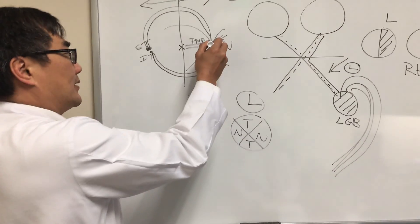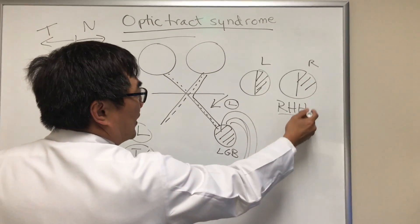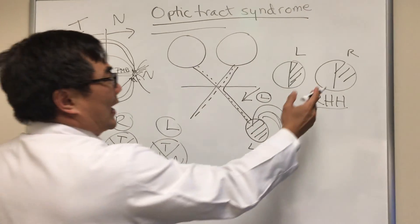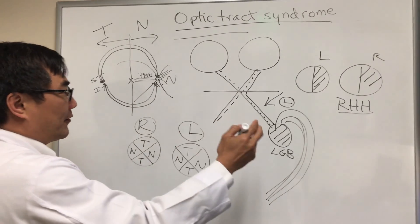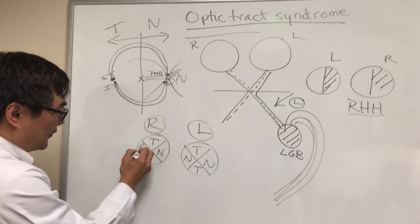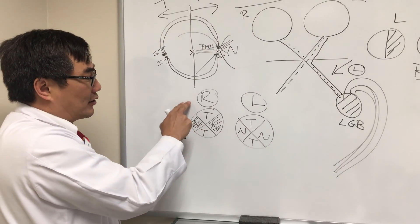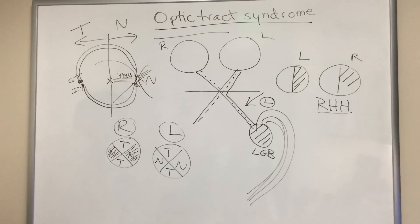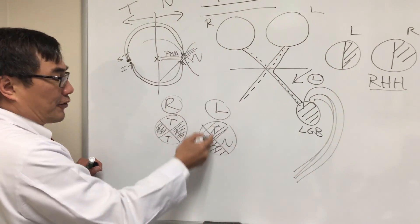In a patient with a right homonymous hemianopsia, the right eye has the temporal field loss and the left eye has nasal field loss. In the eye with the temporal field defect, that's going to be nasal fiber loss — the temporal field is coming from the right eye's nasal fiber. So in the right eye, the atrophy will involve the nasal fibers, producing a bow-tie or band of atrophy across the right optic nerve. In the left eye, which has the nasal field defect, that affects the temporal fiber, so it will be the reverse pattern of atrophy — the temporal fiber will be lost.